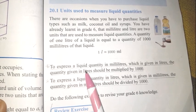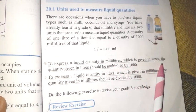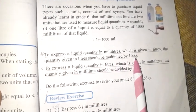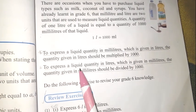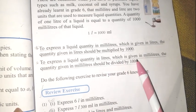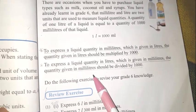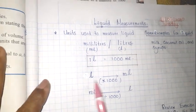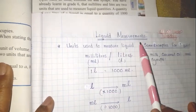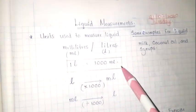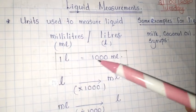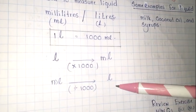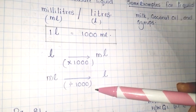To express a liquid quantity in millilitres when it is given in litres, the quantity given in litres should be multiplied by 1000. If you want to convert millilitres into litres, you divide by 1000.